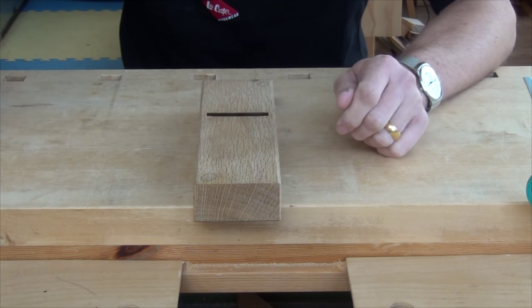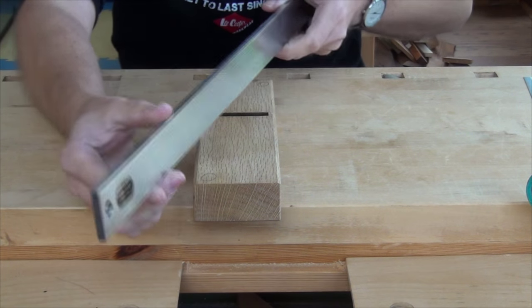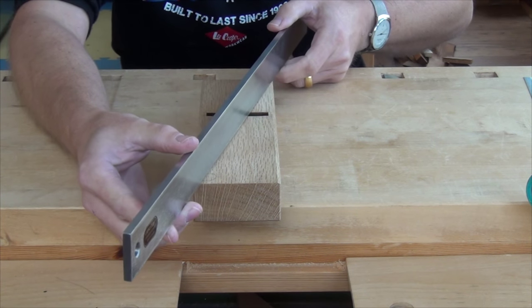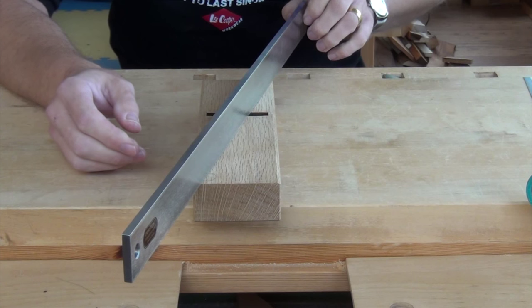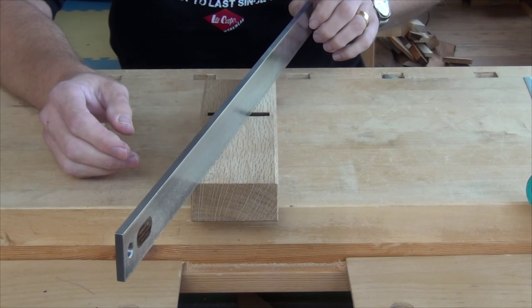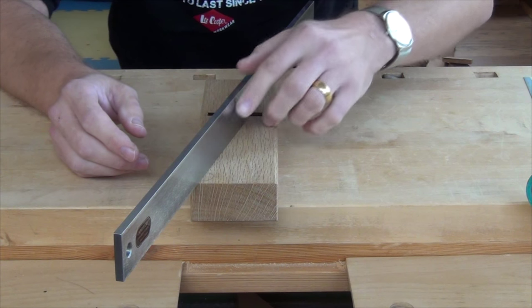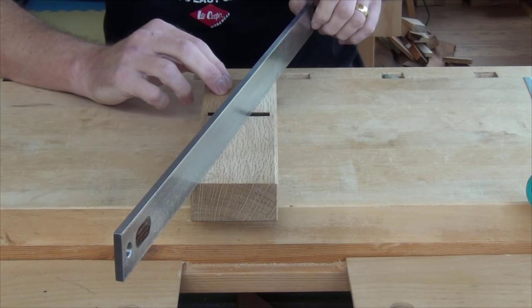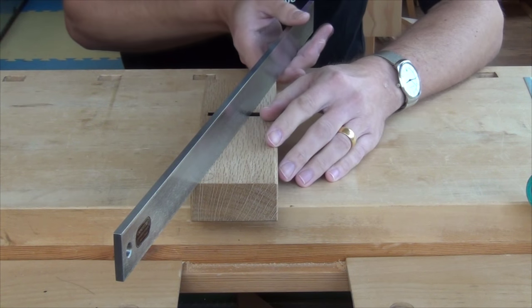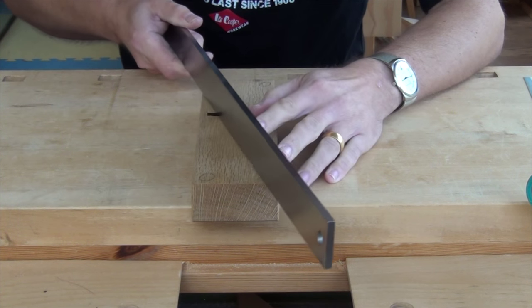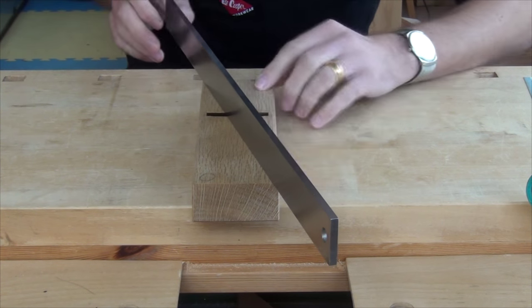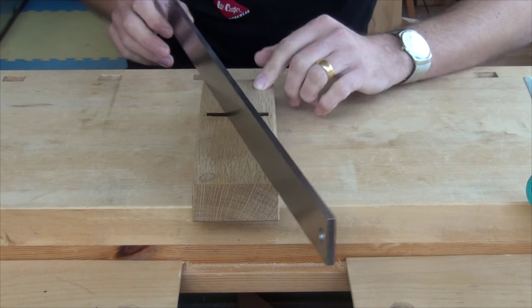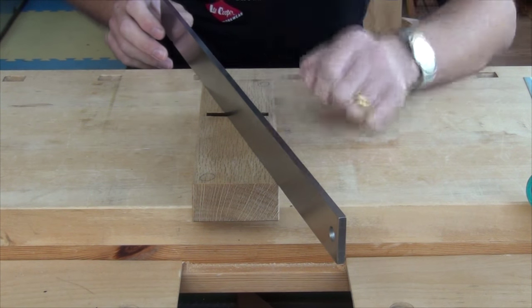Now if I take my straight edge and rest it on those two corners, I can see it's touching those two corners and there's probably a slight gap in the middle. Whereas if I take the other diagonal, it wants to rotate just on the front side of the mouth.